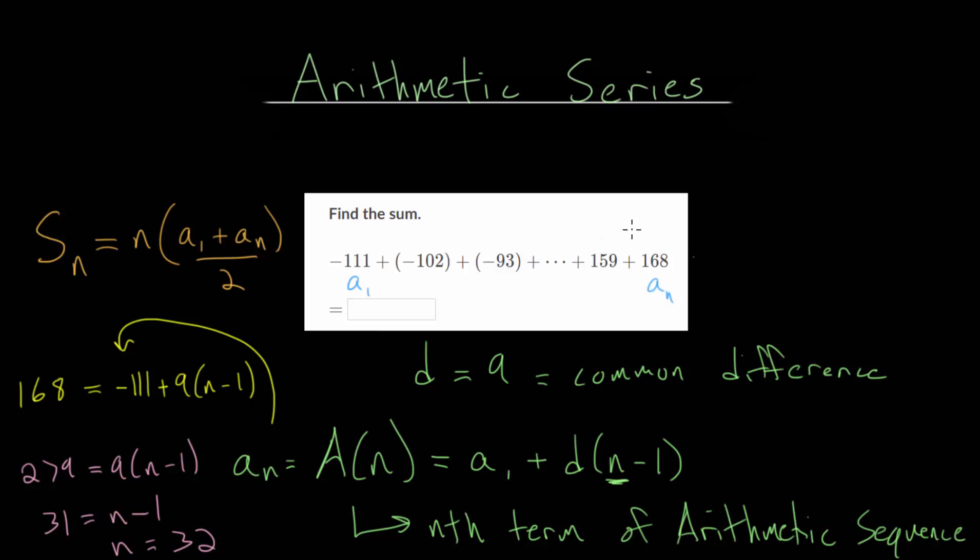So if we don't know how many terms there are, we can use the explicit formula to find that nth term and set up an equation involving n, the number of terms. Since we know the first term, the last term, and the common difference.